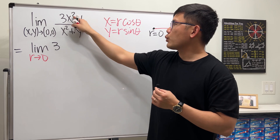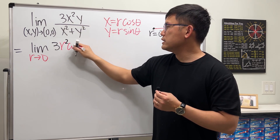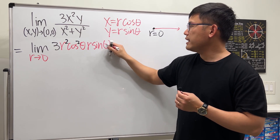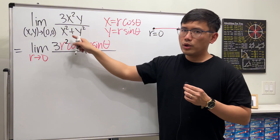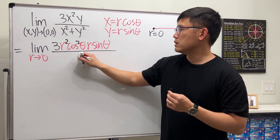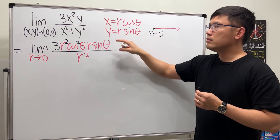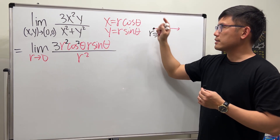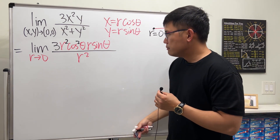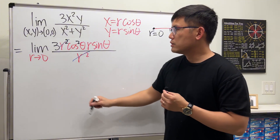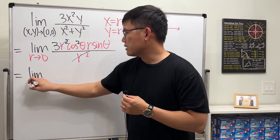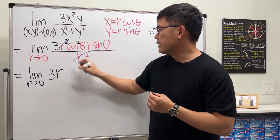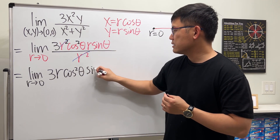Plugging in the polar substitutions: the numerator 3x²y becomes 3·r²cos²θ·r·sinθ. The denominator x² + y² equals r², since squaring and adding gives r²(cos²θ + sin²θ) = r². So r² cancels nicely, leaving the limit as r → 0 of 3r·cos²θ·sinθ.